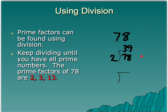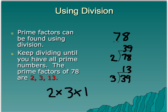Then we take this 39 and divide it again. What is 39 divisible by? It's divisible by 3, and 39 divided by 3 is 13. So our prime factors of 78 are 2, 3, and 13 — because 39 is not a prime number. Our prime factorization is 2 times 3 times 13.